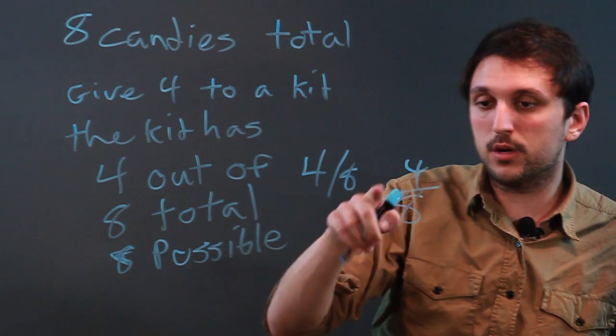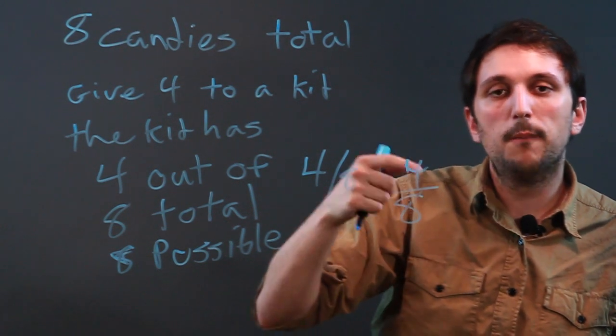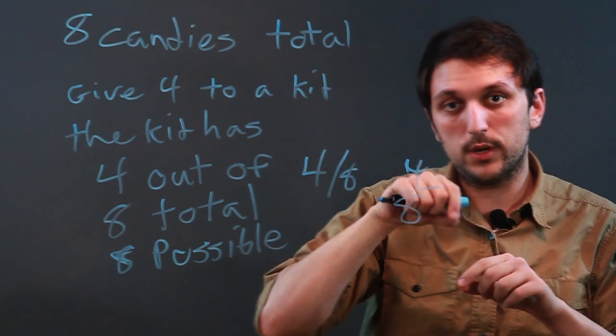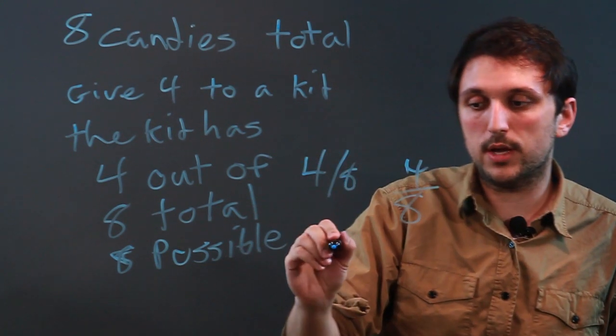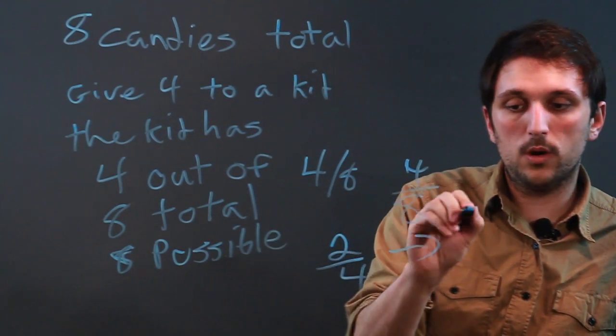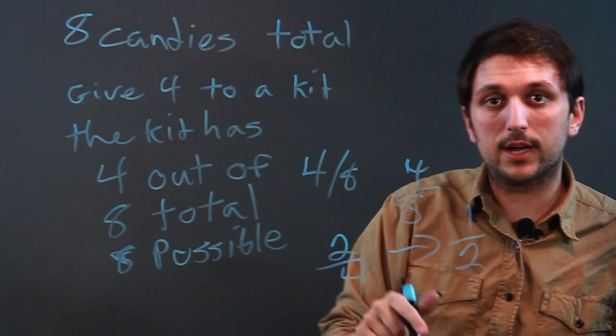And then if you want to simplify the fraction and teach them, take away one candy from what the kid has and take away one candy from what's left, take away another, take away another, and then you have two out of four, and then one out of two. These are all equal fractions.